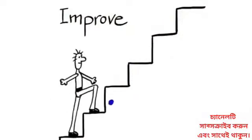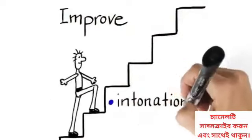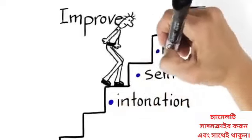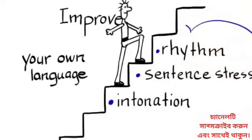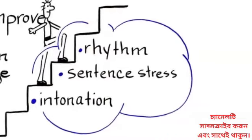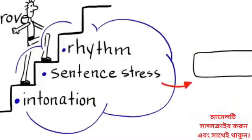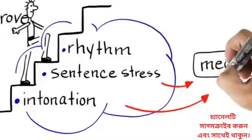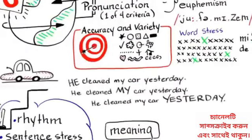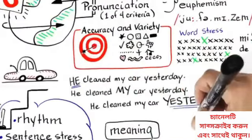The first step is to find out how English intonation, sentence stress, and rhythm differ from your native language. Ensure you understand the effect of sentence stress and intonation on meaning. Then practice using these in different ways.